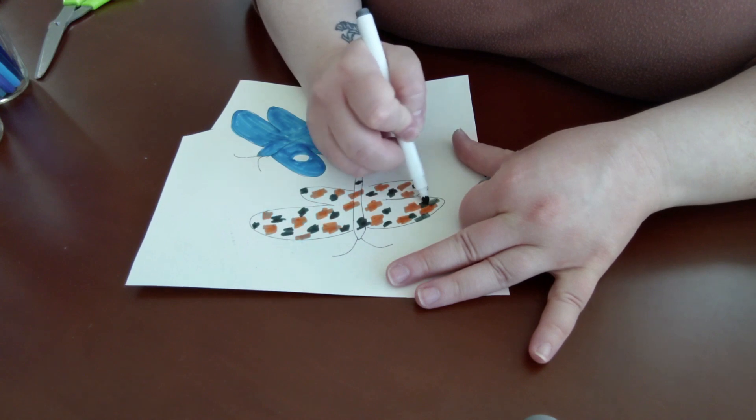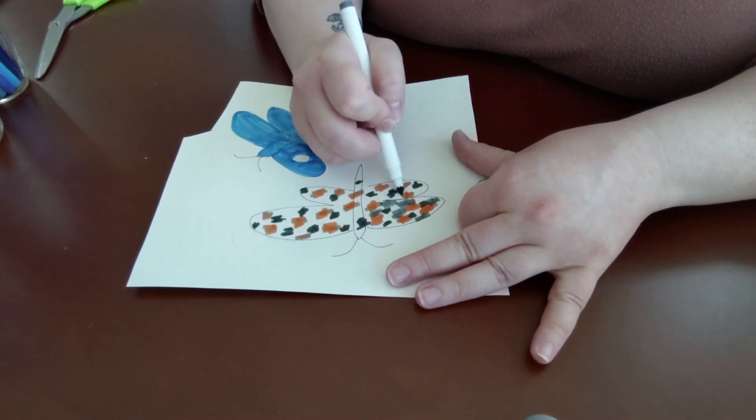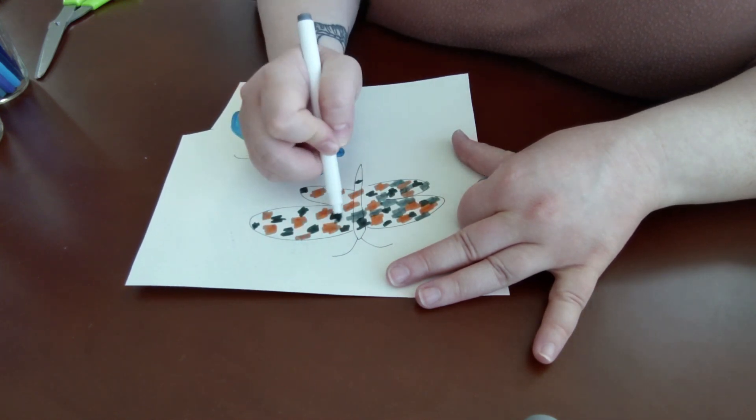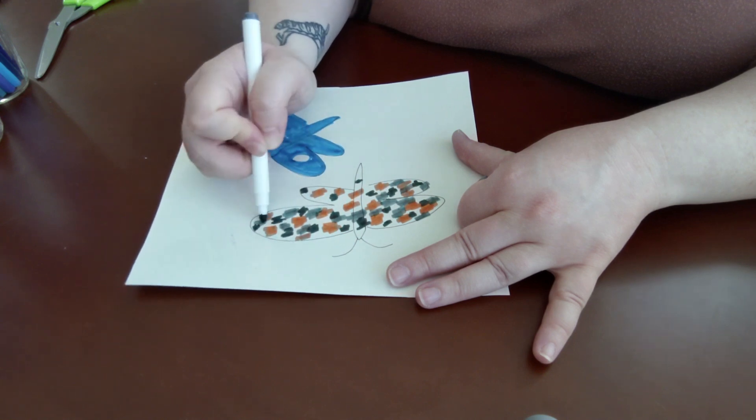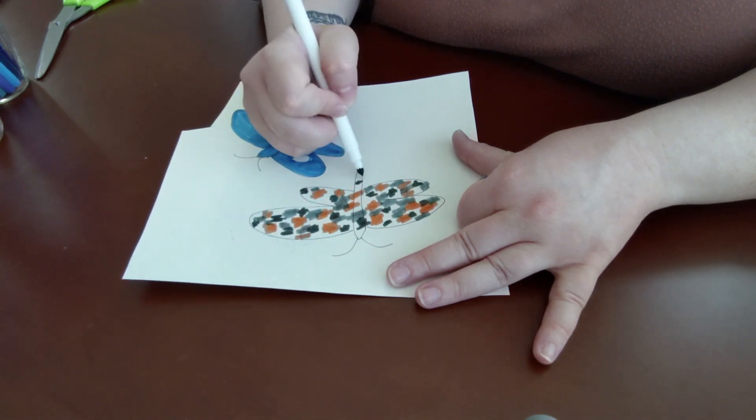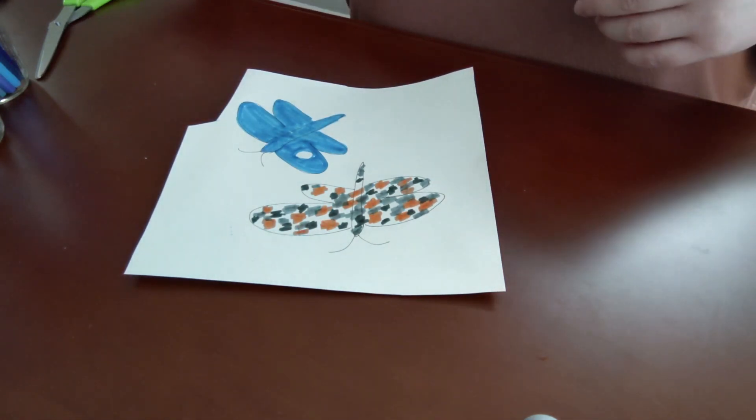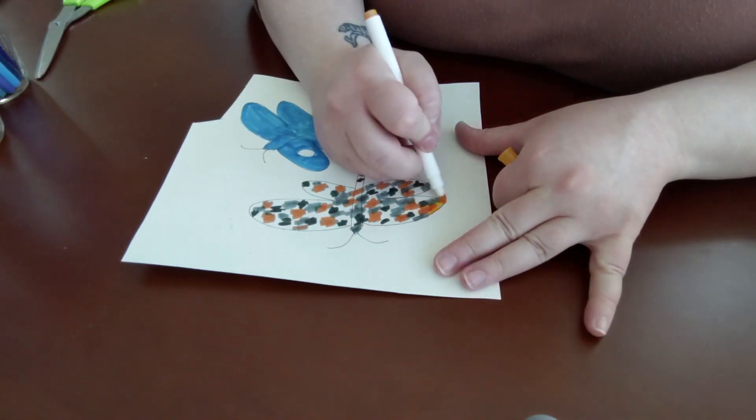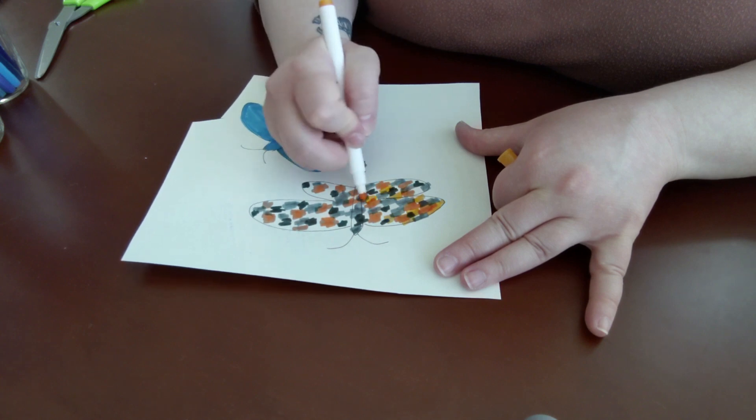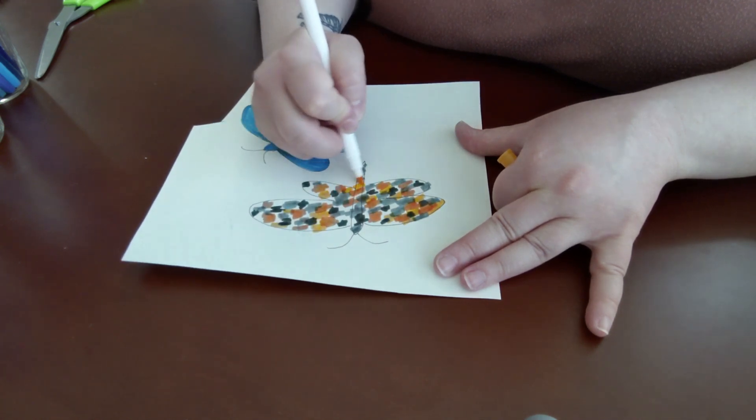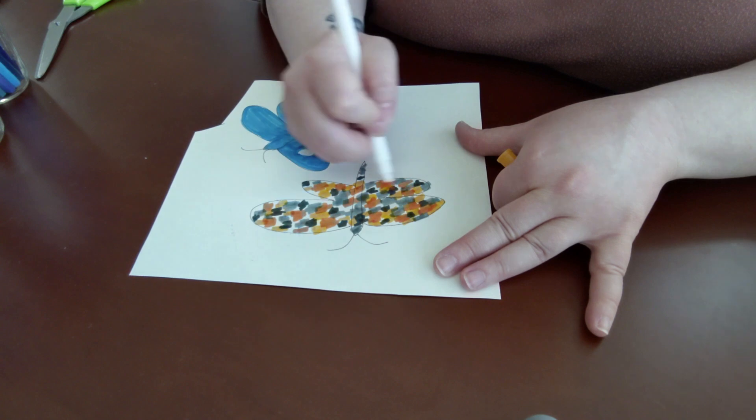Moths and butterflies look a lot alike, but there's a few ways you can tell the difference. Moths usually have very furry bodies and big feathery antennae, and butterflies tend to have much smoother bodies and smoother antennae. Plus, at nighttime you see moths, and during the day you see butterflies.